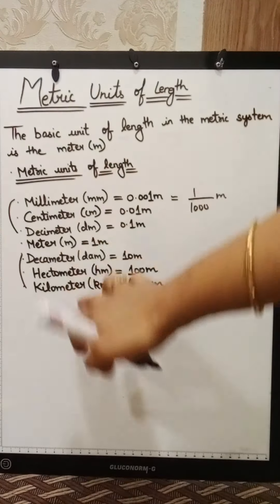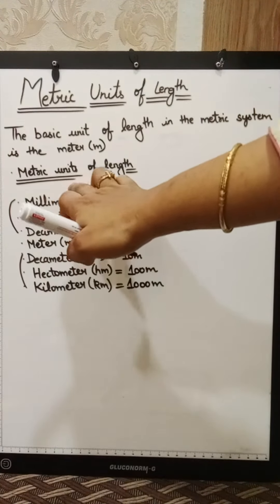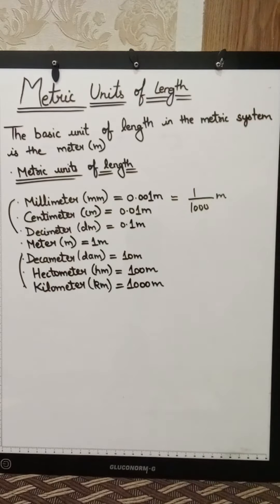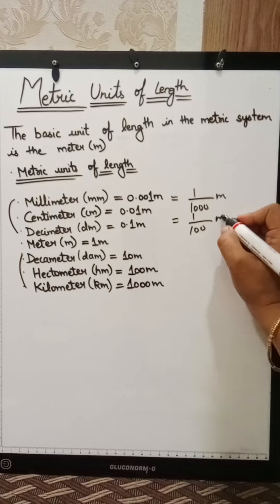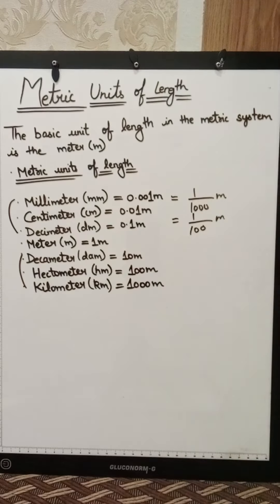When we take units larger than the smallest millimeter, it is centimeter. Centimeter, we can write as 1 upon 100 meter. Just like decimal, we are just making decimal.